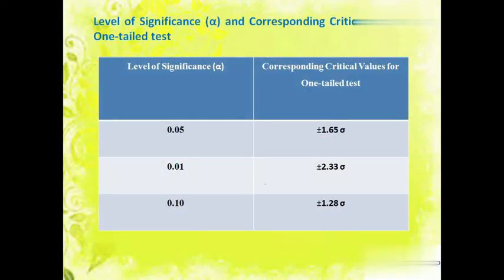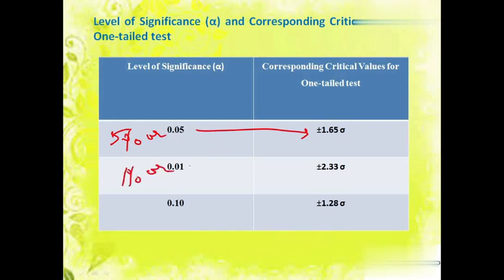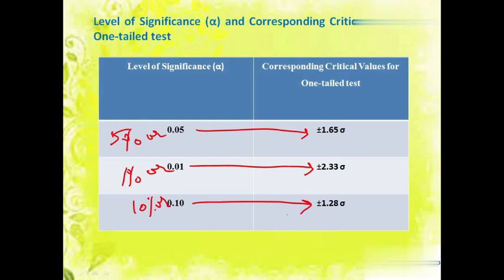The table shows the level of significance and corresponding critical values for a one-tail test. For 5% level of significance or 0.05, the critical value is plus minus 1.65 sigma. Whereas in case of 1% or 0.01 level of significance, the critical value is plus 2.33 sigma. Whereas for 10% level of significance or 0.10, the critical value is plus minus 1.28 sigma.